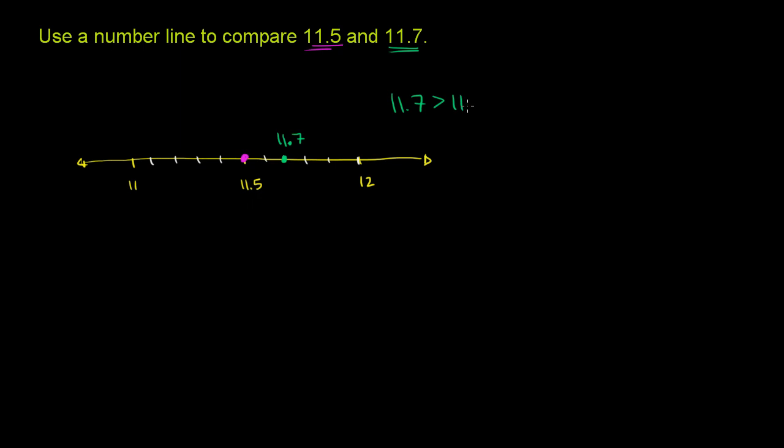11.7 is greater than 11.5. And really, you didn't have to draw a number line to figure that out. They're both 11 and something else. This is 11 and 5 tenths. This is 11 and 7 tenths. So clearly, this one is going to be greater. You both have 11, but this has 7 tenths as opposed to 5 tenths.